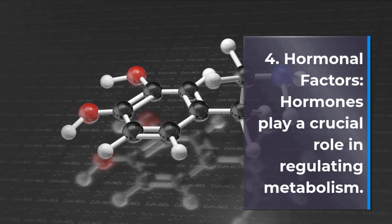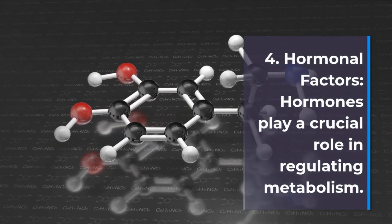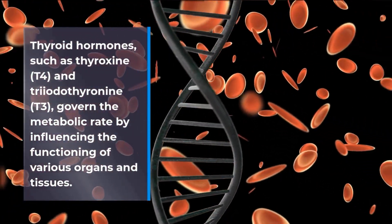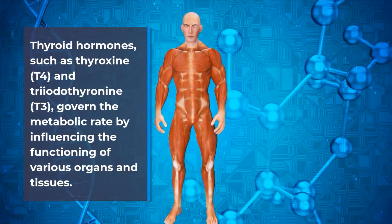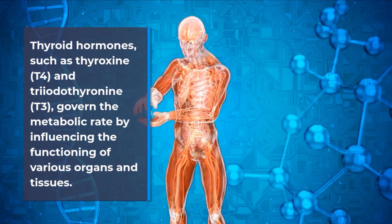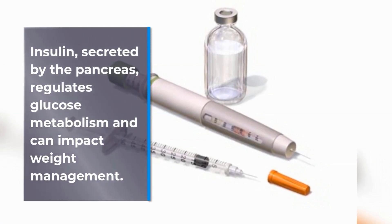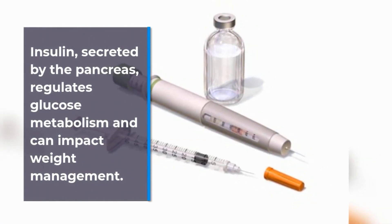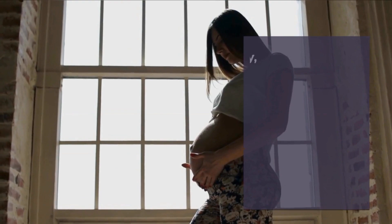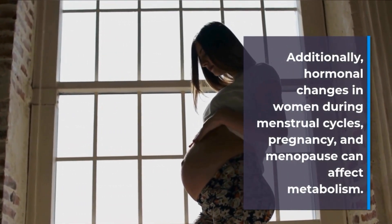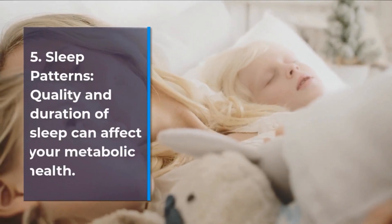4. Hormonal Factors. Hormones play a crucial role in regulating metabolism. Thyroid hormones, such as thyroxine (T4) and triiodothyronine (T3), govern the metabolic rate by influencing the functioning of various organs and tissues. Insulin, secreted by the pancreas, regulates glucose metabolism and can impact weight management. Additionally, hormonal changes in women during menstrual cycles, pregnancy, and menopause can affect metabolism.